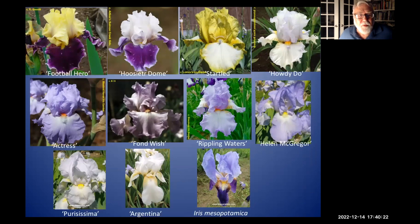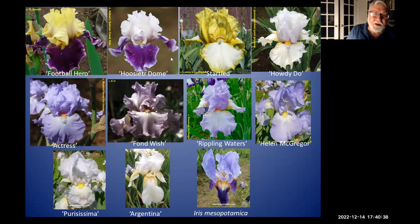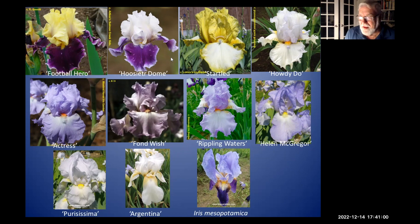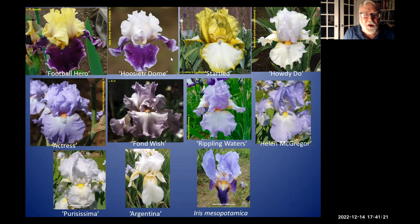In doing this program, I looked at Football Hero, our latest Dykes Medal winner, and went back generation by generation until I finally hit a species. At the bottom of the page, you can see Iris Mesopotamica - this was 10 generations from Mesopotamica. We talk a lot about how many generations things are from species. The species crosses in theory could be any number of generations, but obviously you have a classification - tall bearded irises - so you don't need to continue calling them species crosses. The idea of adding a species to get something new is what we're all about.